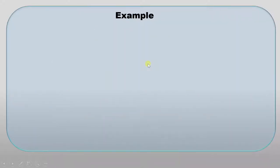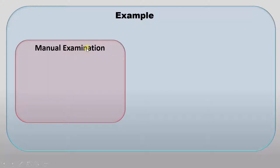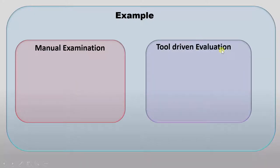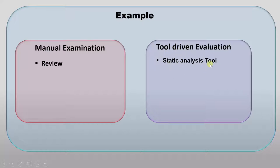Static Testing can be performed in two ways. The first is Manual Examination, where code is in front of you and you perform testing manually. The second is Tool Driven Evaluation, where you pass the code through a tool and the tool generates a report. The example of Manual Examination is Review. For Tool Driven Evaluation, a Static Analysis Tool is used — one example is the QAC Tool.